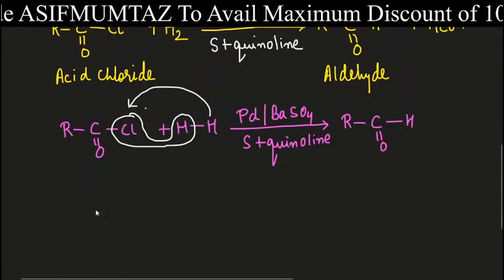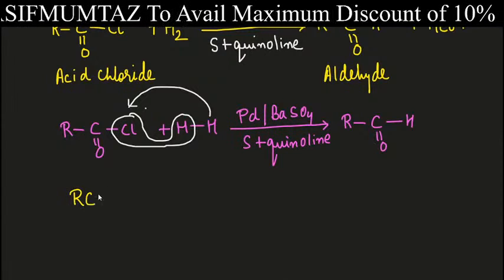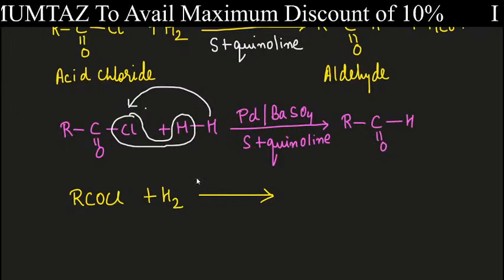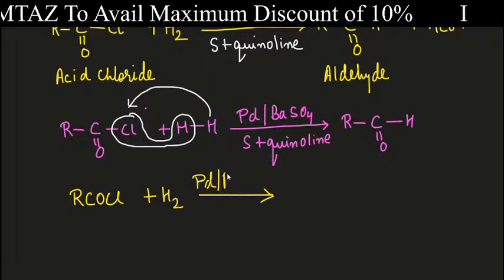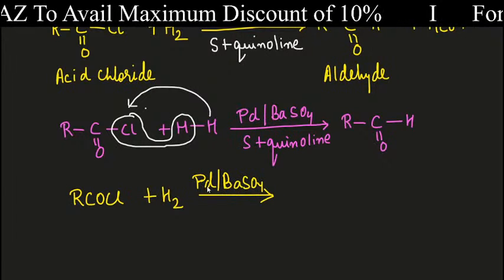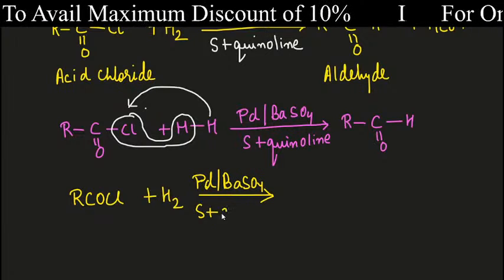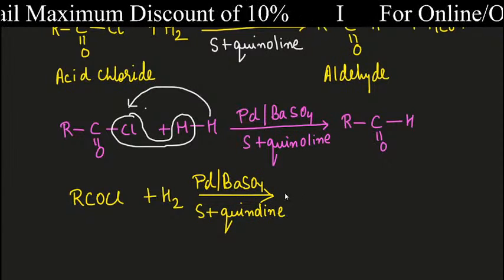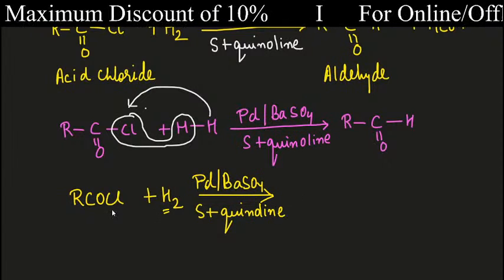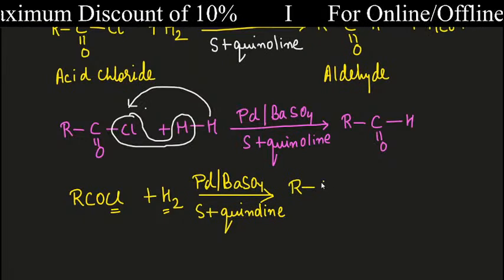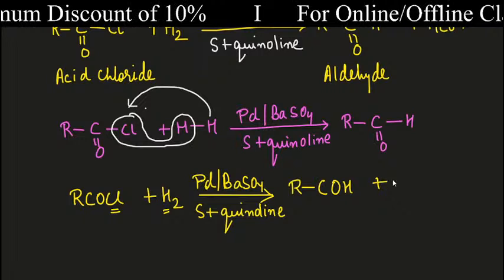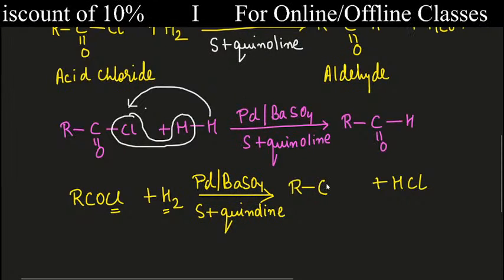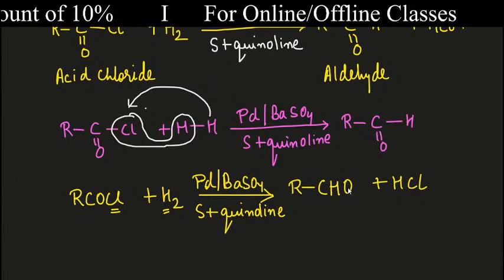You can also see this in shortcut way — you don't need to open it that much. RCOCl with hydrogen — I keep writing the catalyst repeatedly so that you remember it: palladium barium sulfate. This catalyst is also known as Lindlar's catalyst.